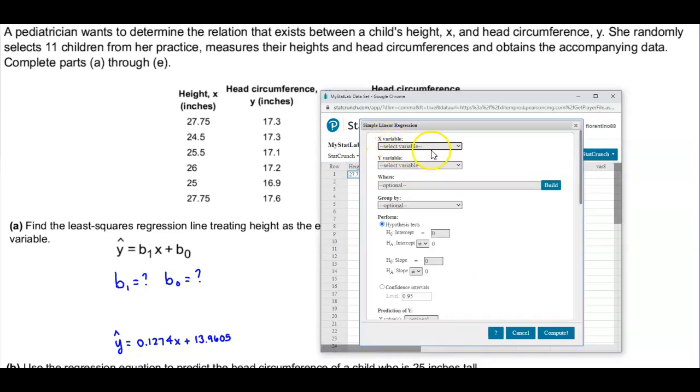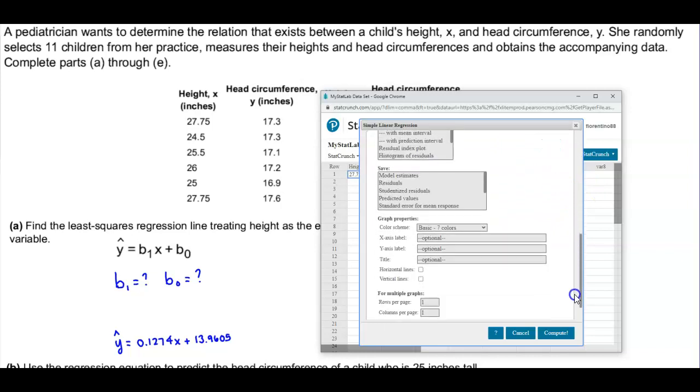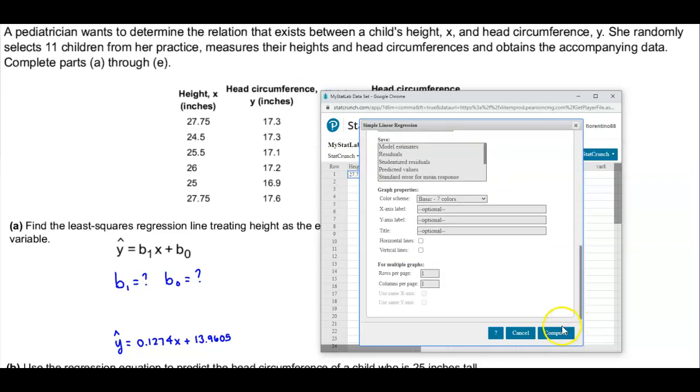Now in the X variable, we already know what it is because it's going to tell us here that height is X inches. The Y variable is going to be the head circumference. And then all we need to do now is go all the way to the bottom at this point, and the only thing we need to do is just select compute.